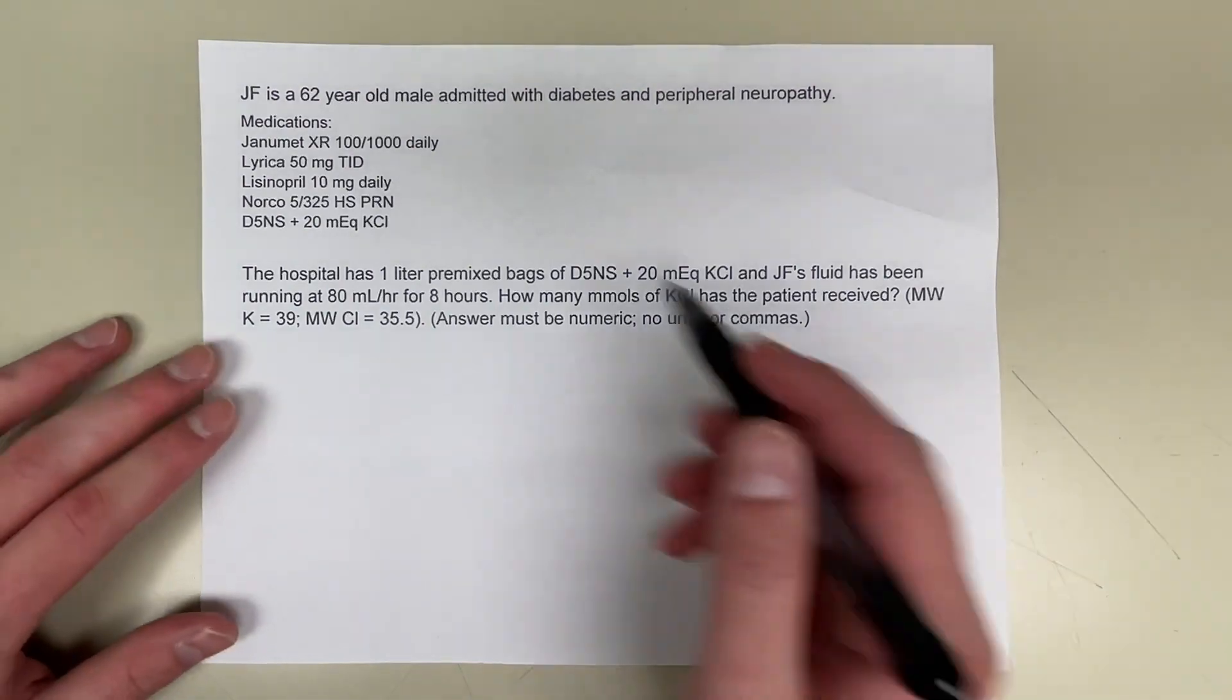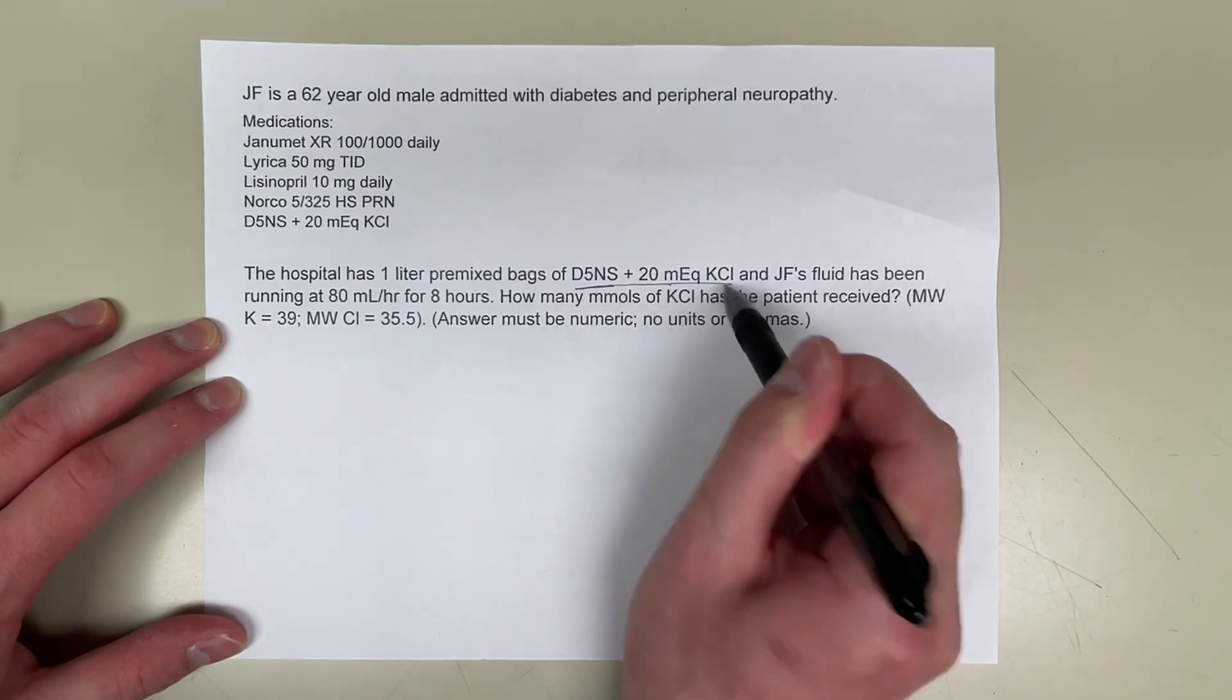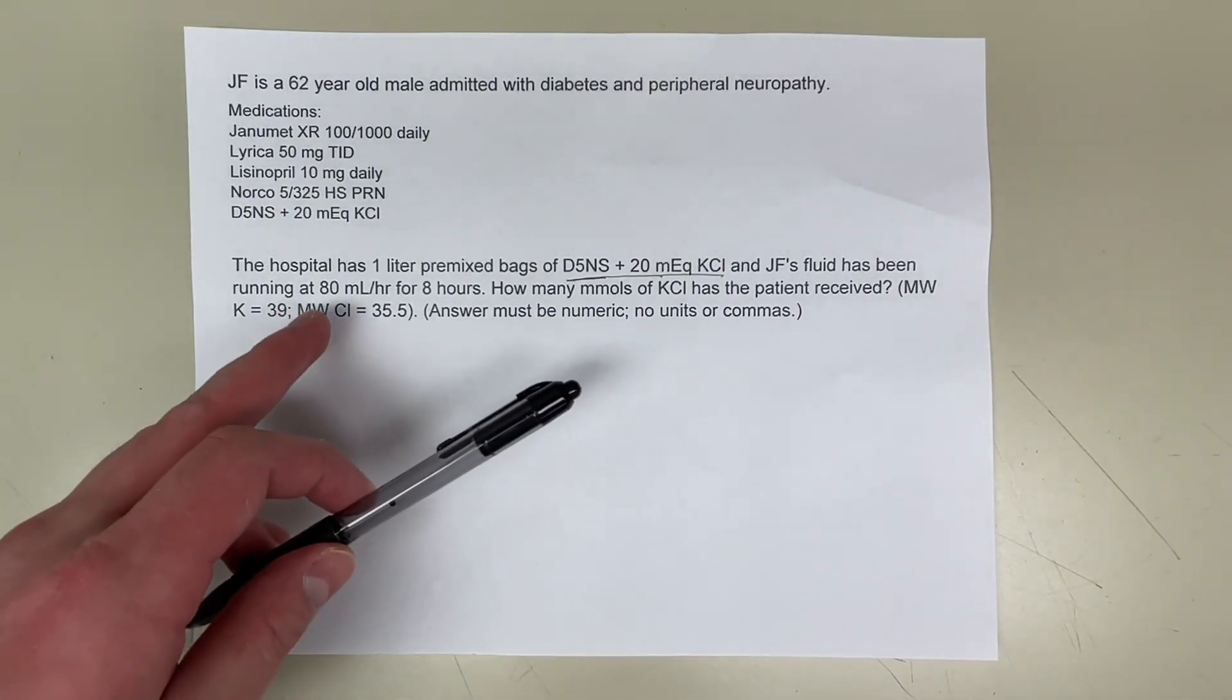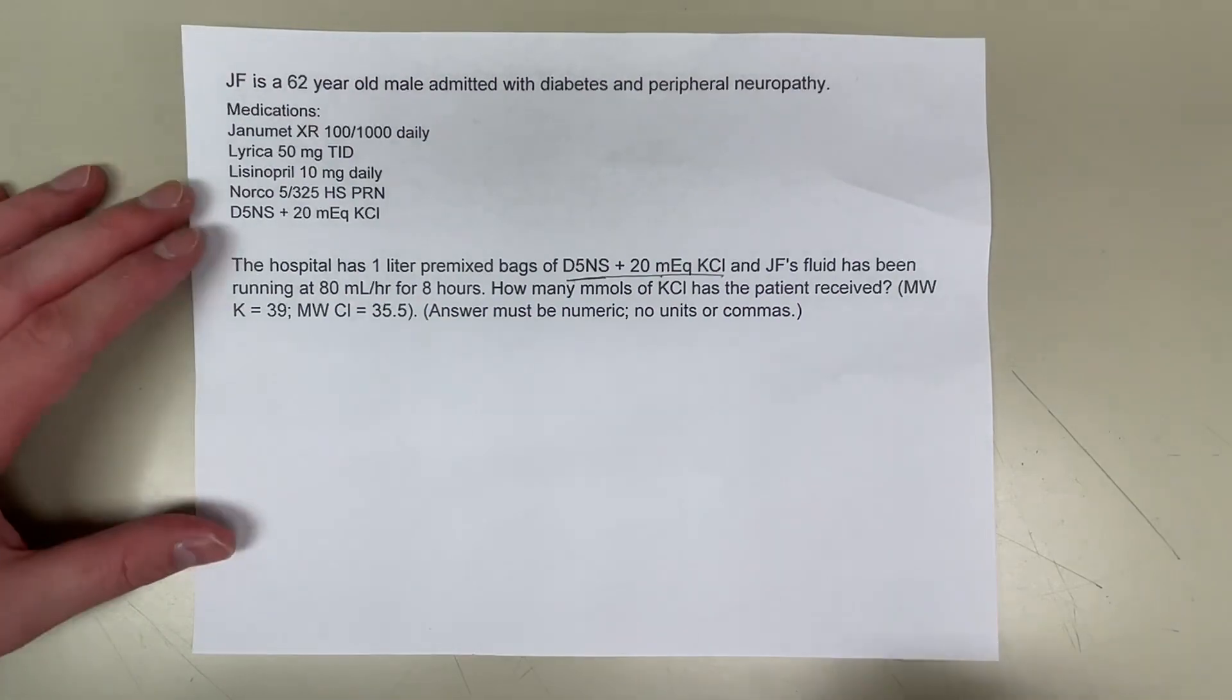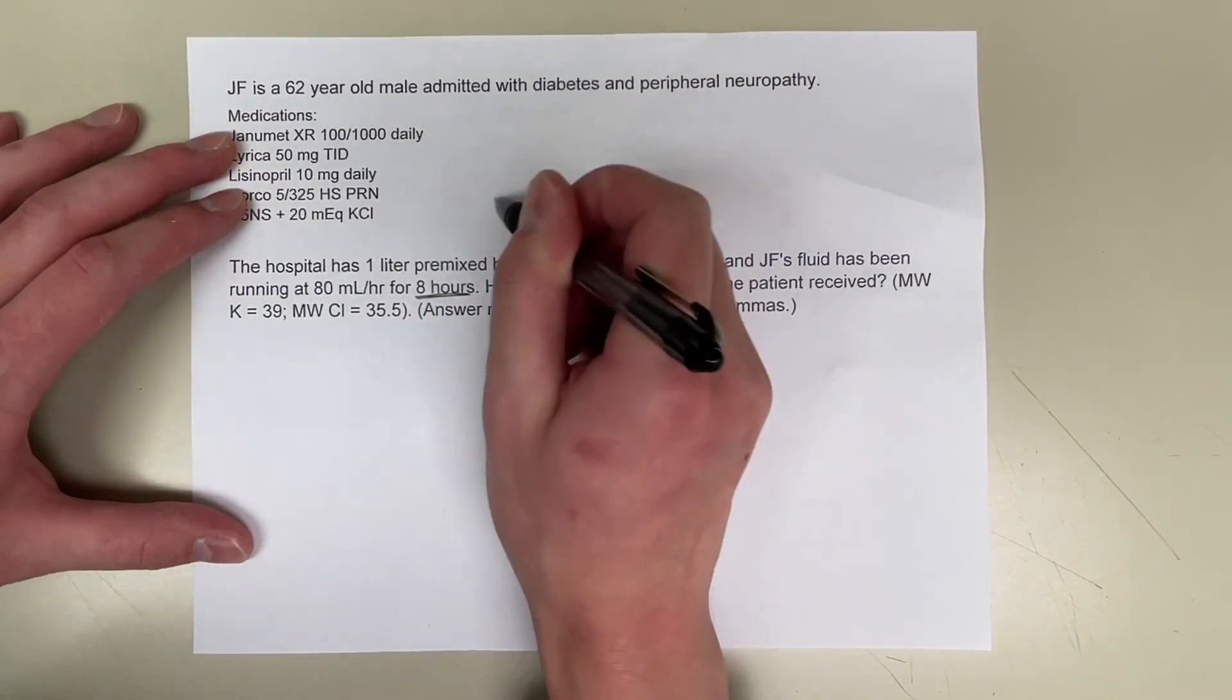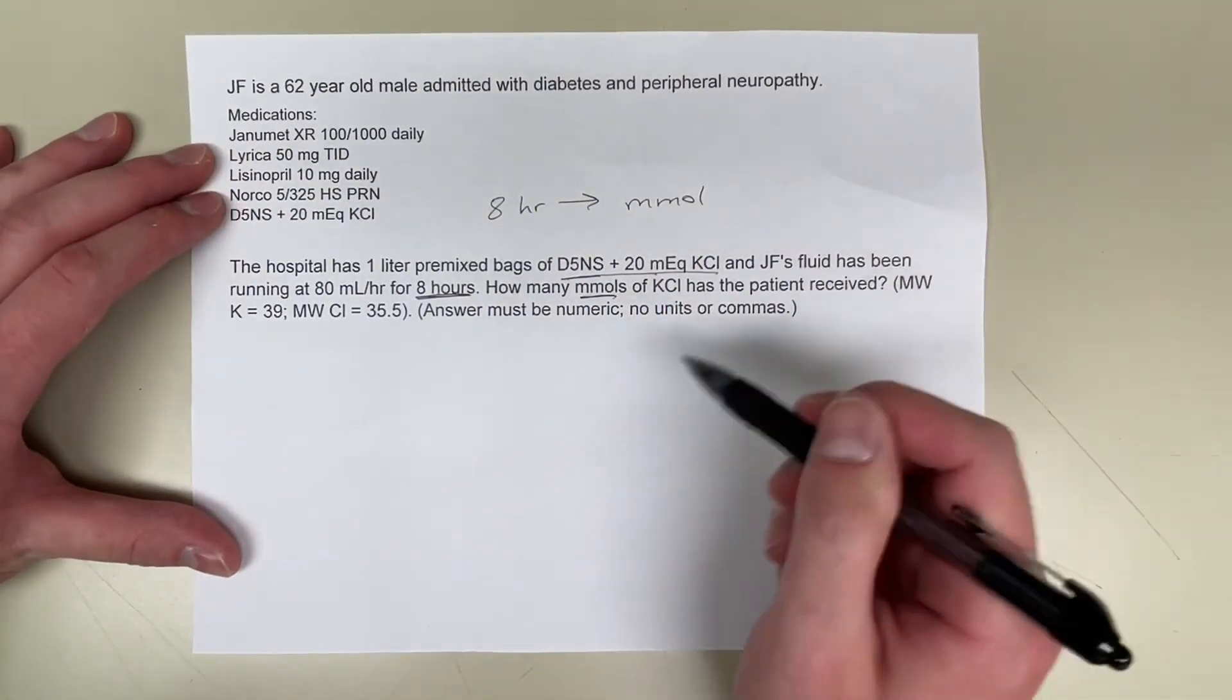So for this question, you don't need to know any of this medication list because they already tell you what they're looking for: D5-NS with 20 milliequivalents of potassium chloride. And this fluid has been running at 80 milliliters per hour for 8 hours. So they want us to convert it to millimoles. We basically need to convert this 8 hours into millimoles. That's what the question is asking.